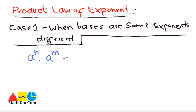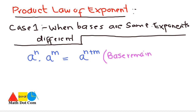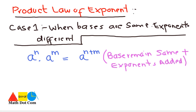To simplify, you write the base one time — that is 'a' — and you add their exponents: n plus n. The base remains the same and the exponents are added. So you have to do these two things: keep the base the same and add the exponents when multiplying two numbers with the same base.